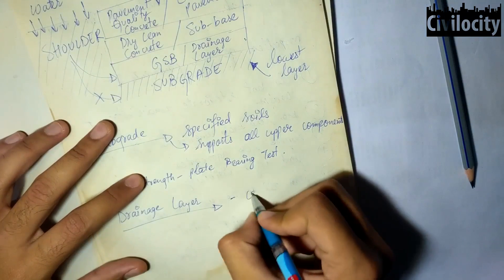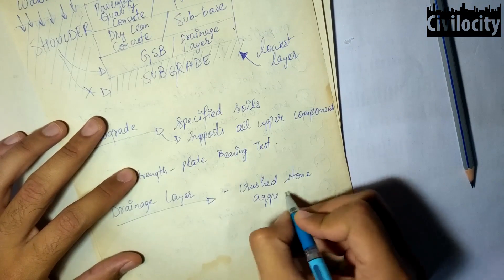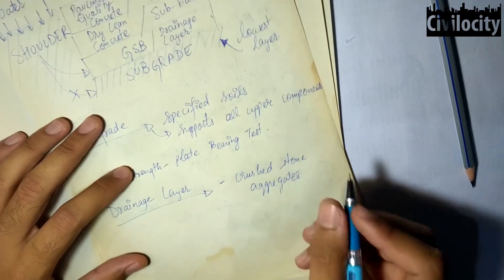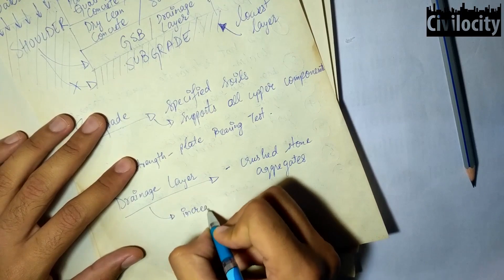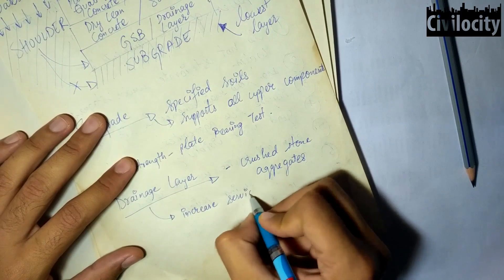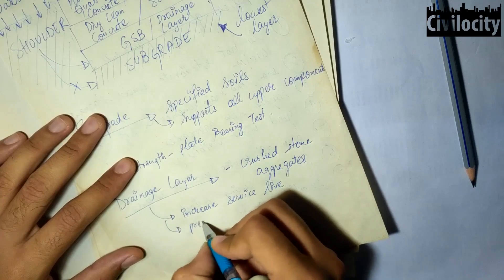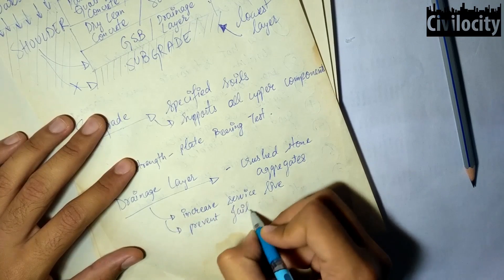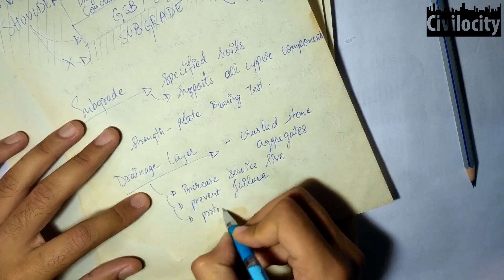Therefore we provide a drainage layer which includes crushed stone aggregates with high permeability and coarse aggregates with low percentage of fines will serve as good drainage layer. Basically a drainage layer is provided to increase the service life and improve the performance of cement concrete pavements, also to prevent the earlier failures of rigid pavements due to pumping and blowing.